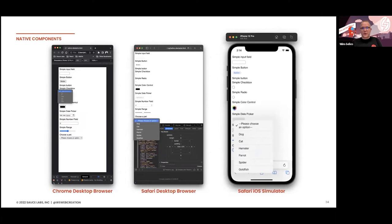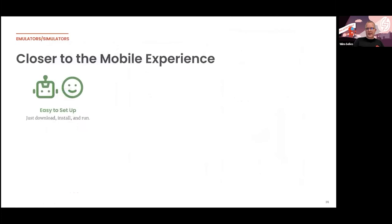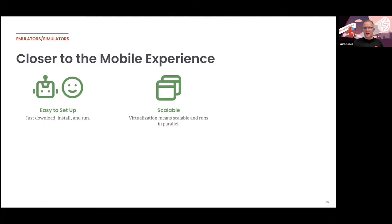Now let's look at emulators and simulators. If you have a Mac, it's easy to set up — you can install everything and run both Android and iOS. If you only have a Windows machine, you can at least run Android. It's easy and free. It's also scalable, but it consumes a lot of system power, so running this in the cloud makes it easier to scale and get fast feedback. And this is the first phase where you'd already have native API integration — you can test the impact of the keyboard on your application, and even biometrics.